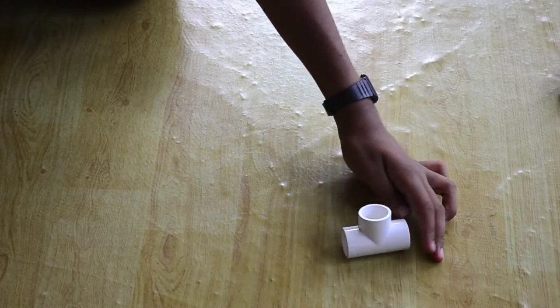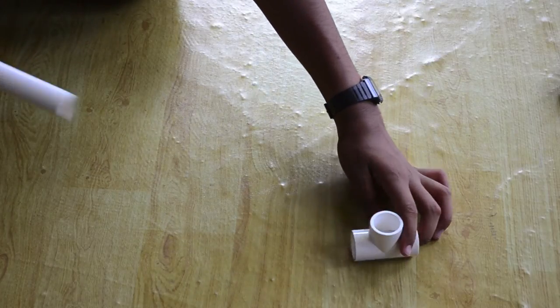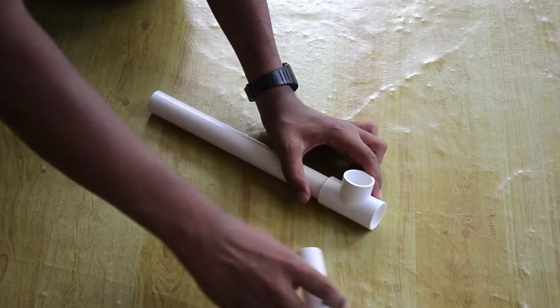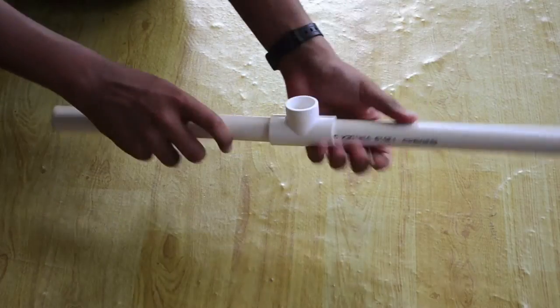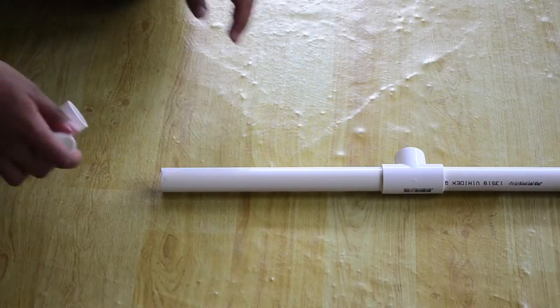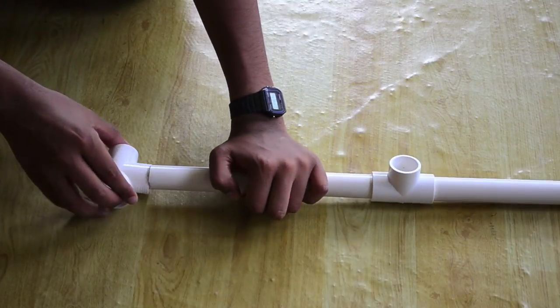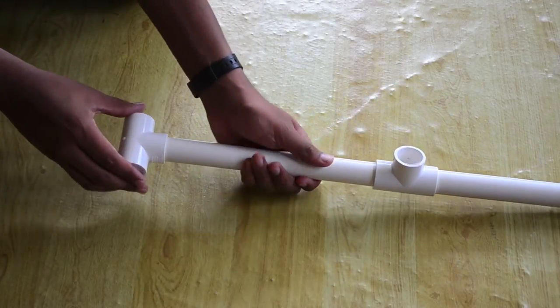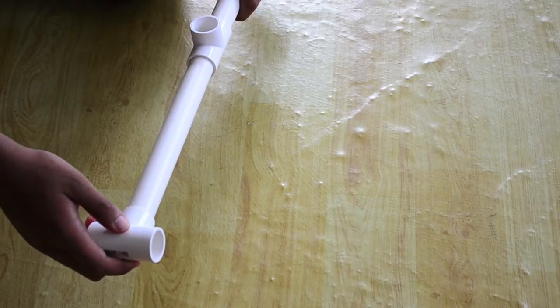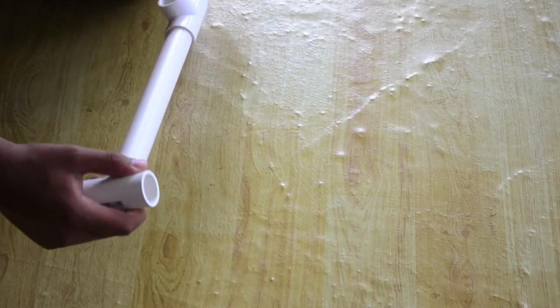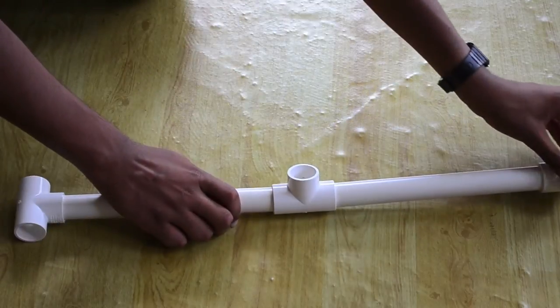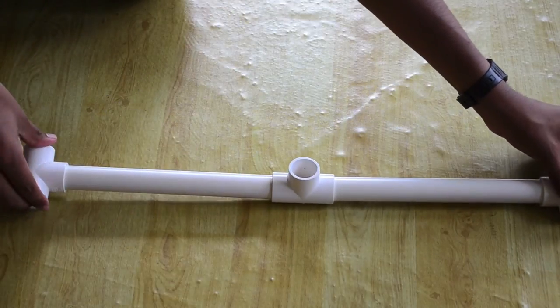So the first step is to grab your T-joint and place the 25cm pieces in each of the ends, making sure that you tighten them so they don't come apart. Then grab your other T-joint and put it in one of the ends, and also do the same on the other end. Tighten them up so they don't come apart, and make sure they sit flush with the ground.